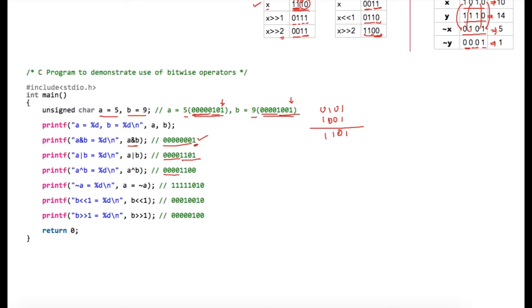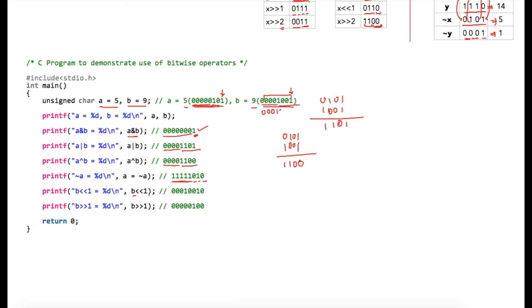For XOR, when both digits are the same we write zero; the first four bits are zero so we have 0000 there. For the remaining bits — 0101 and 1001 — XOR gives 1100 as the second part. The one's complement of a simply inverts all bits: the first five zero bits become ones, and the next three bits 101 become 010. Applying left shift by one on b shifts all values one digit to the left, giving 00010010 with a zero appended on the right. Applying right shift by one on b shifts everything one place right, with a zero added on the left.